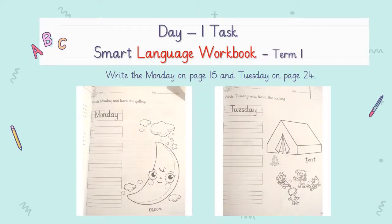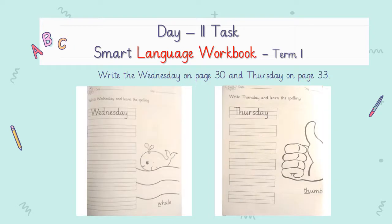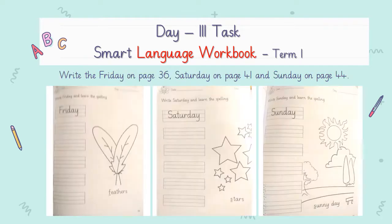Okay, dear students. This is your Day 1 task. This task should be done in your Smart Language Workbook. You need to write Monday on page 16 and Tuesday on page 24, and learn their spellings. This is your Day 2 task — write Wednesday on page 30 and Thursday on page 33, and learn their spellings. This is your Day 3 task — write the spelling of Friday on page 36, Saturday on page 41, and Sunday on page 44, and learn their spellings.